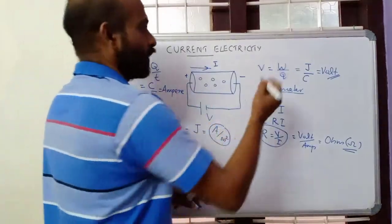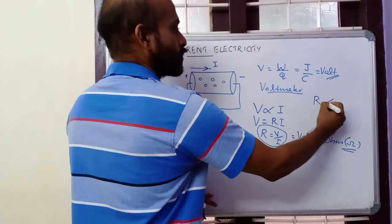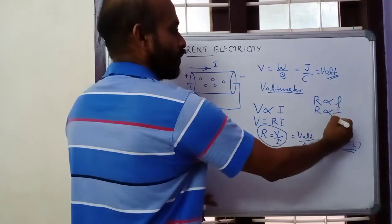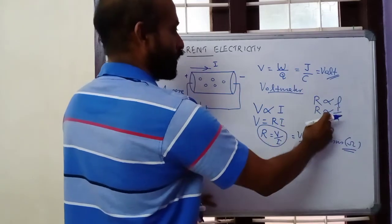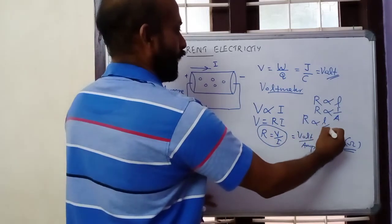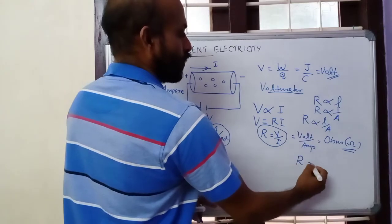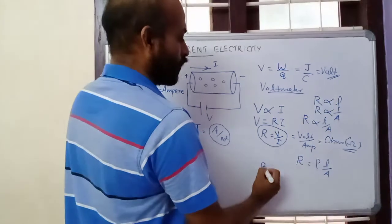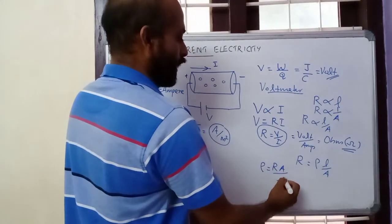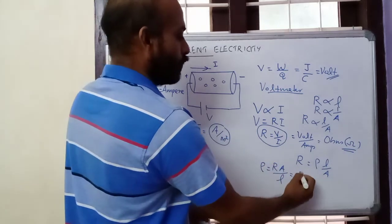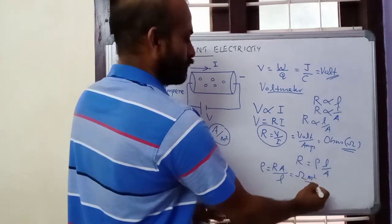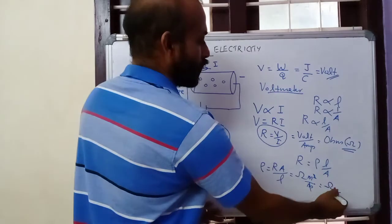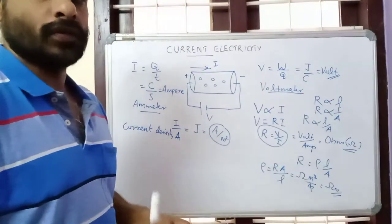Resistance is directly proportional to the length of the conductor and inversely proportional to the area of cross section. Combining these together, R is proportional to L by A, or R equals a constant rho times L by A. Rho is called resistivity. Rho equals R times A divided by L. R has unit ohm, area meter squared, length meter — cancelling one meter we get ohm meter as the unit of resistivity.